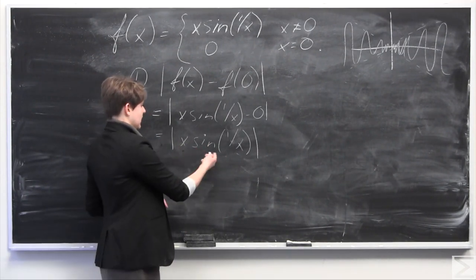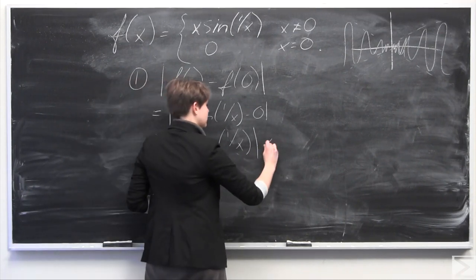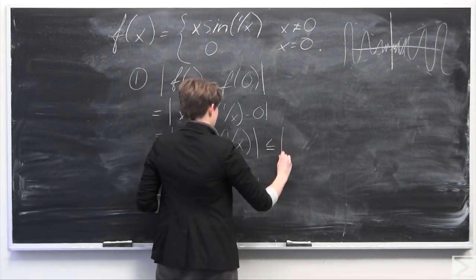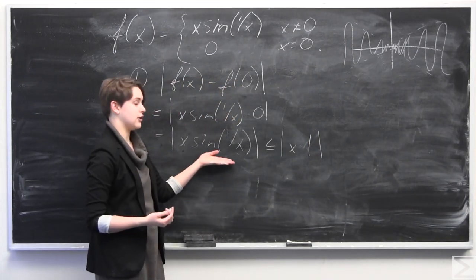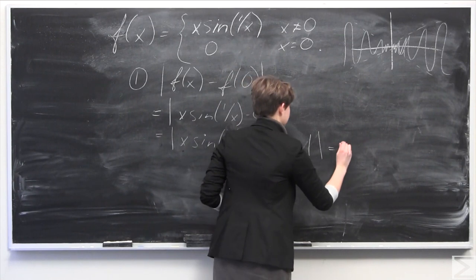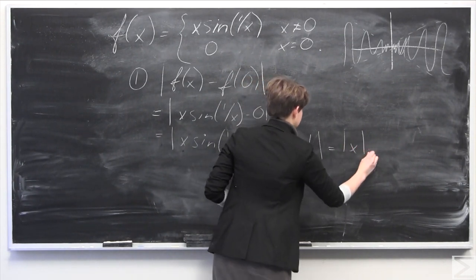So we can say that this here, x times sine of 1 over x, is always going to be less than or equal to x times 1, as 1 is the maximum value of this function here, which just equals absolute value of x.